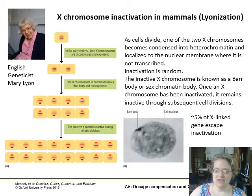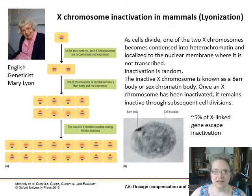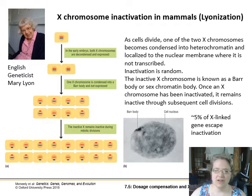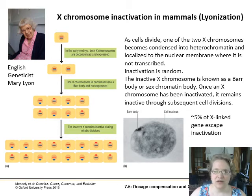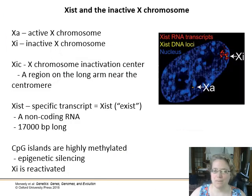Since the inactive X is not permanently deleted, genes can still occasionally be transcribed from it — but it's much harder. Only about 5% of X-linked genes actually escape this inactivation, so there is roughly a 95% shutdown of that other X chromosome.